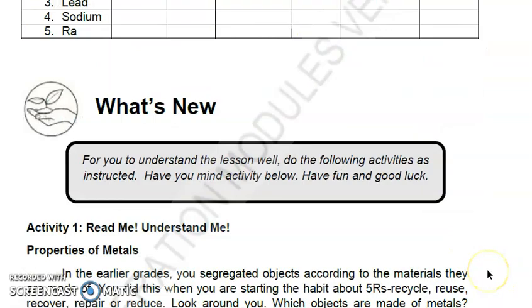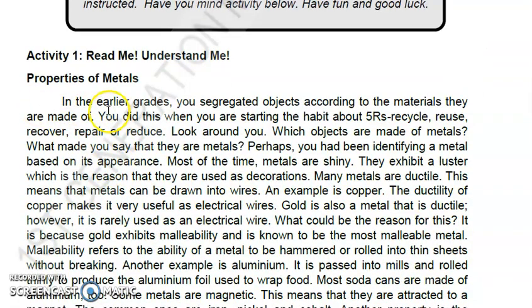Let's proceed to the properties of metal. We have first, luster or lustrous - that is the reason why our metals are shiny. Next is metals are ductile.